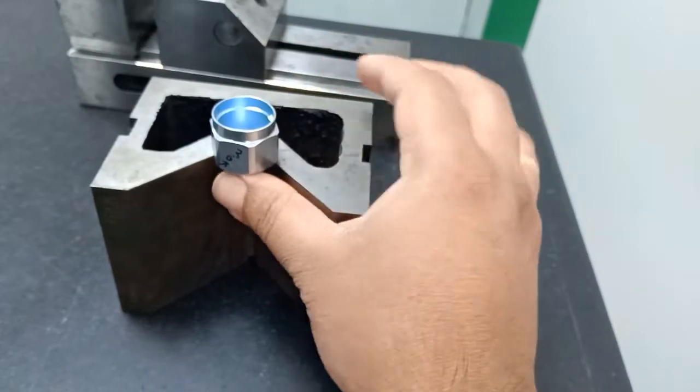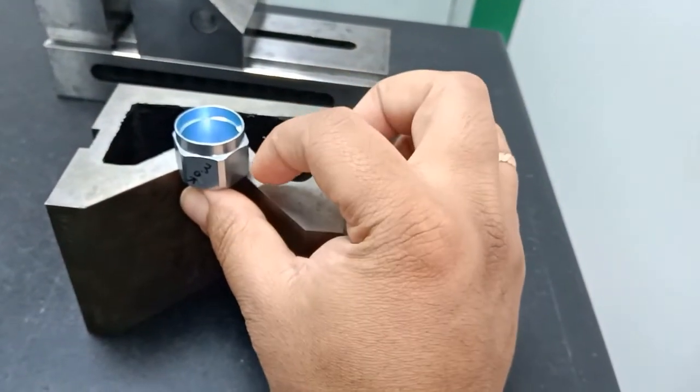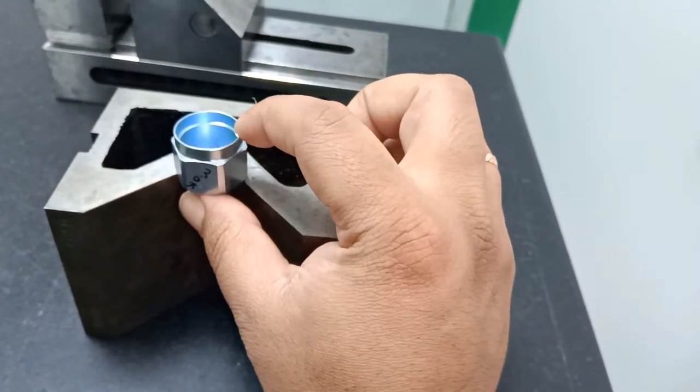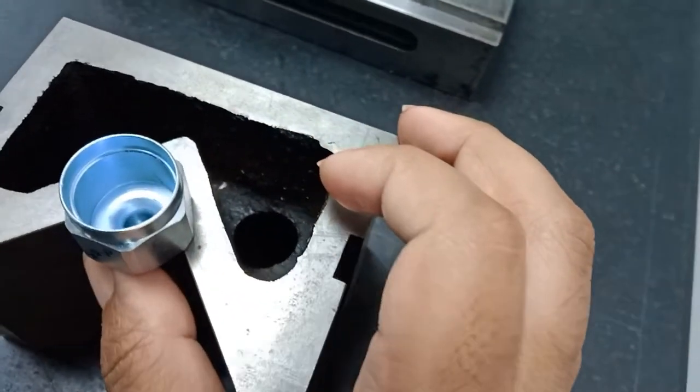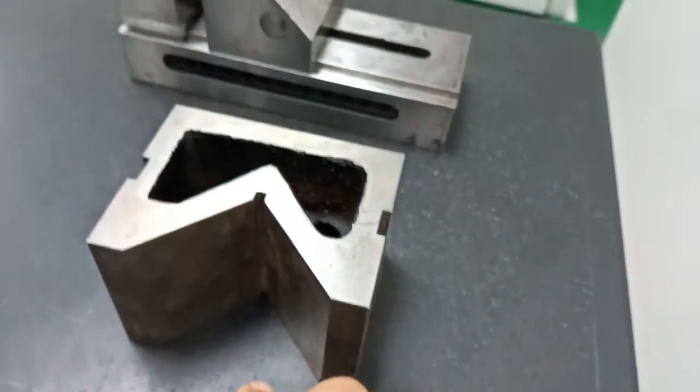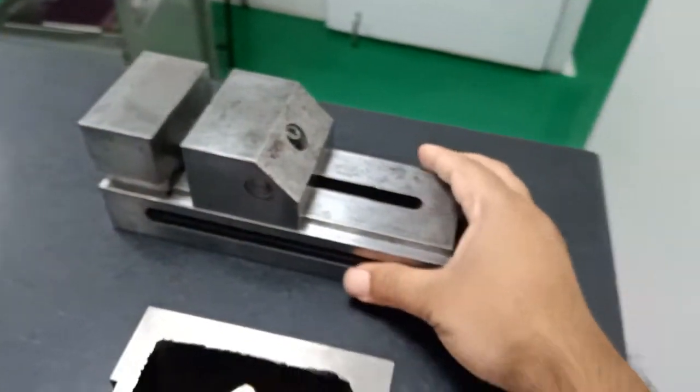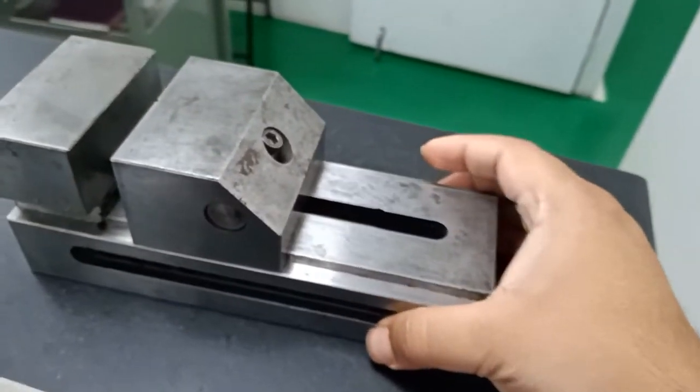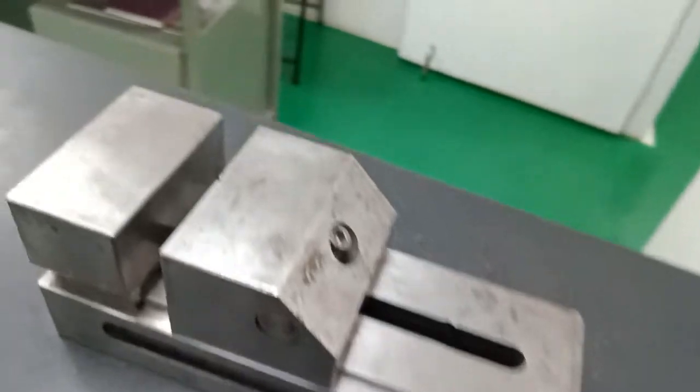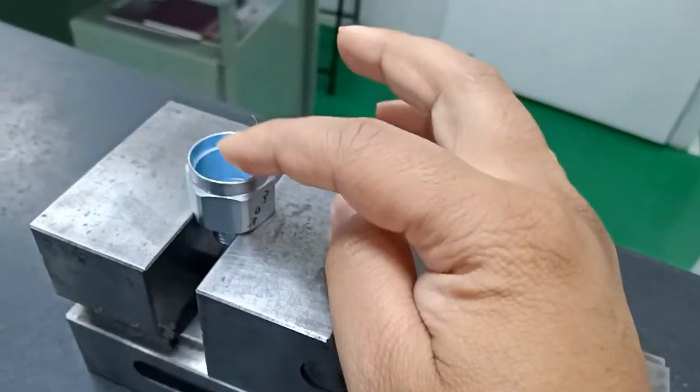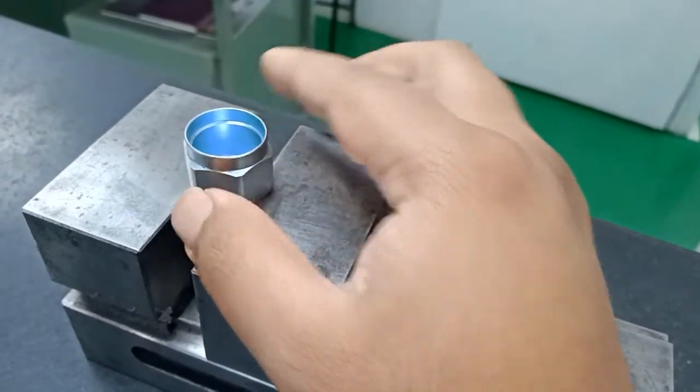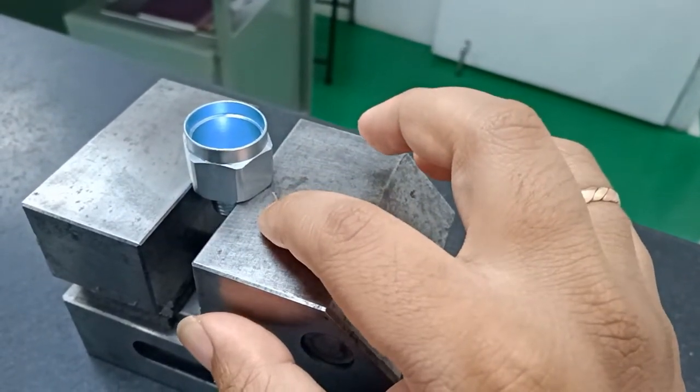Like this, and we can check the height from here to here and inside also. This is the precision vise. We can put the part here like this and we can check the part height like here to here.